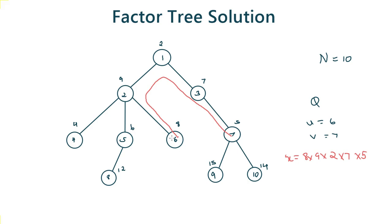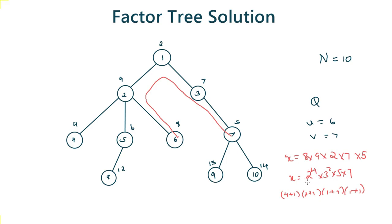First let's discuss how to find the number of factors of a number. We start by prime factorizing the number. So x = 2^4 × 3^2 × 5 × 7. The number of factors will be (4+1)(2+1)(1+1)(1+1), where 4 is the power of the first prime factor, 2 is the power of the second prime factor, and 1 and 1 are the powers of the other prime factors. The number of factors of a number is the product of (1 + the power of each prime factor).